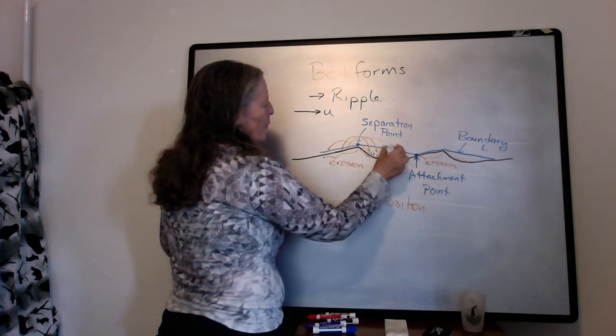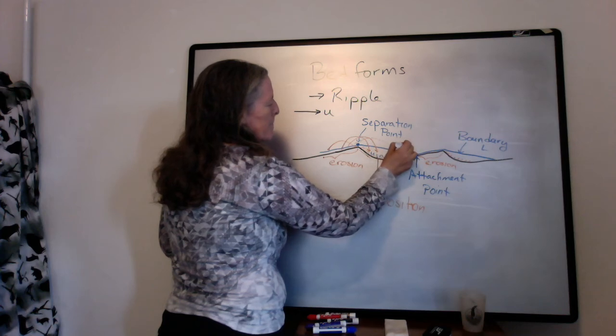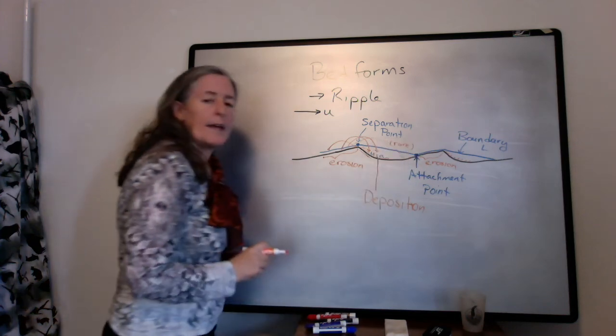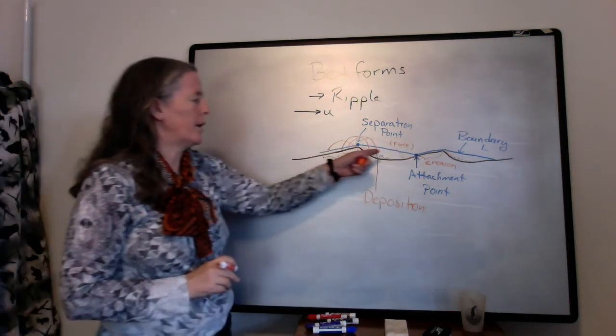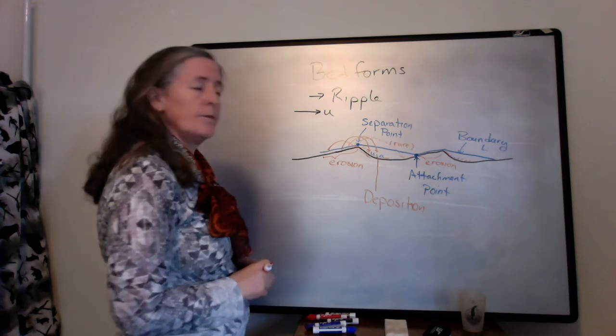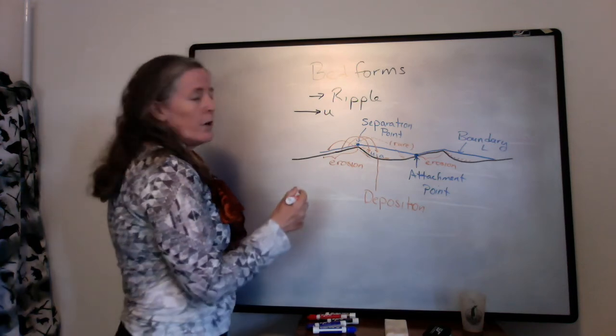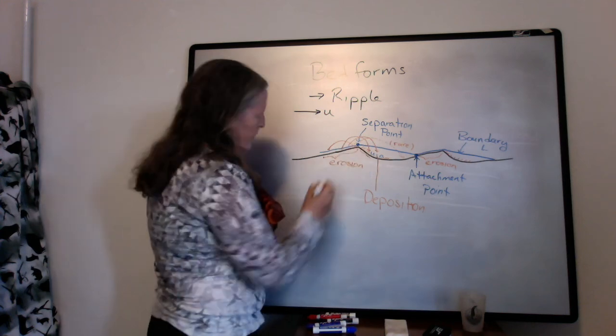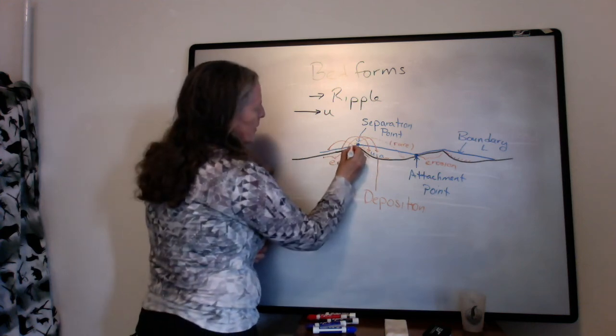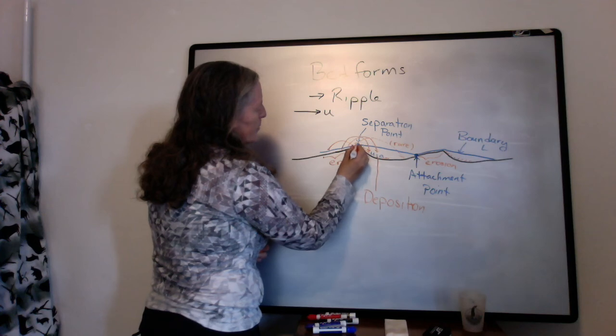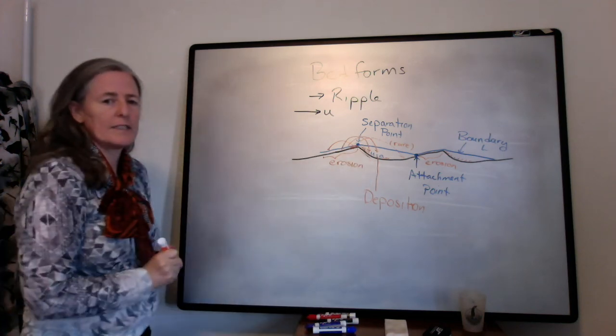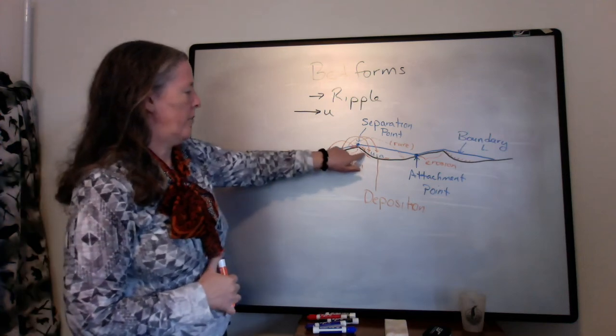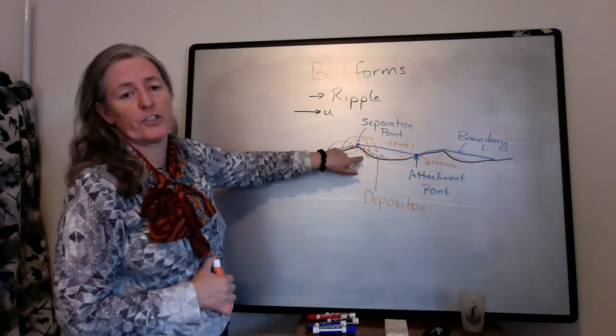They can, depending on the flow, but they often don't. We can also have grains that are rolling, and if the grains are large enough that they're rolling, they'll reach the separation point and then they'll just fall down into this area of deposition on the ripple.